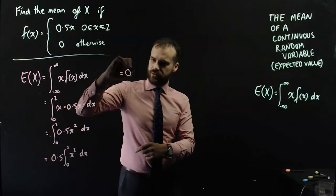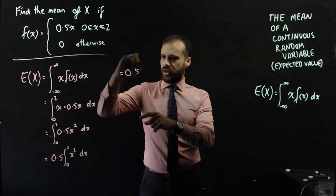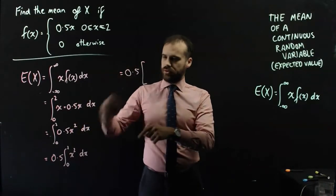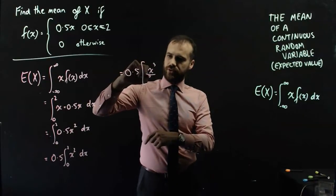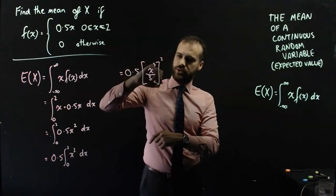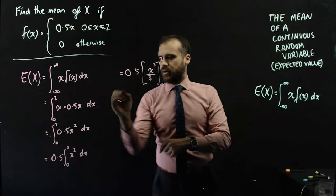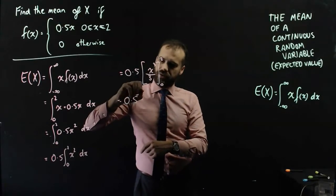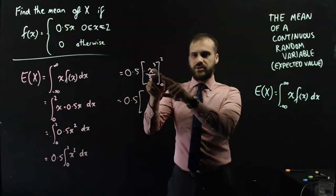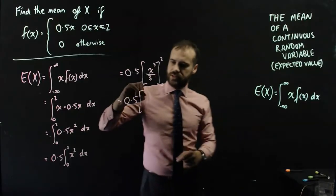So, we have 0.5, and then we're integrating x cubed over 3 between 0 and 2. So that's going to be 0.5, and then I'm subbing in 2, and I'm subbing in 0.